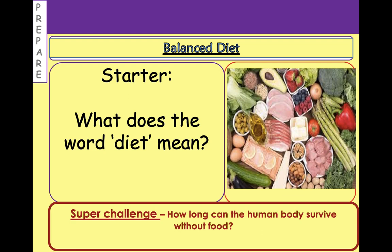The word diet is often used in two different ways in the English language. Most commonly you'll probably hear relatives, on TV, or even maybe your friends and family talking about going on a diet. Going on a diet means actually controlling your diet. The word diet describes the food that you consume regularly — the things that you eat regularly is your diet.